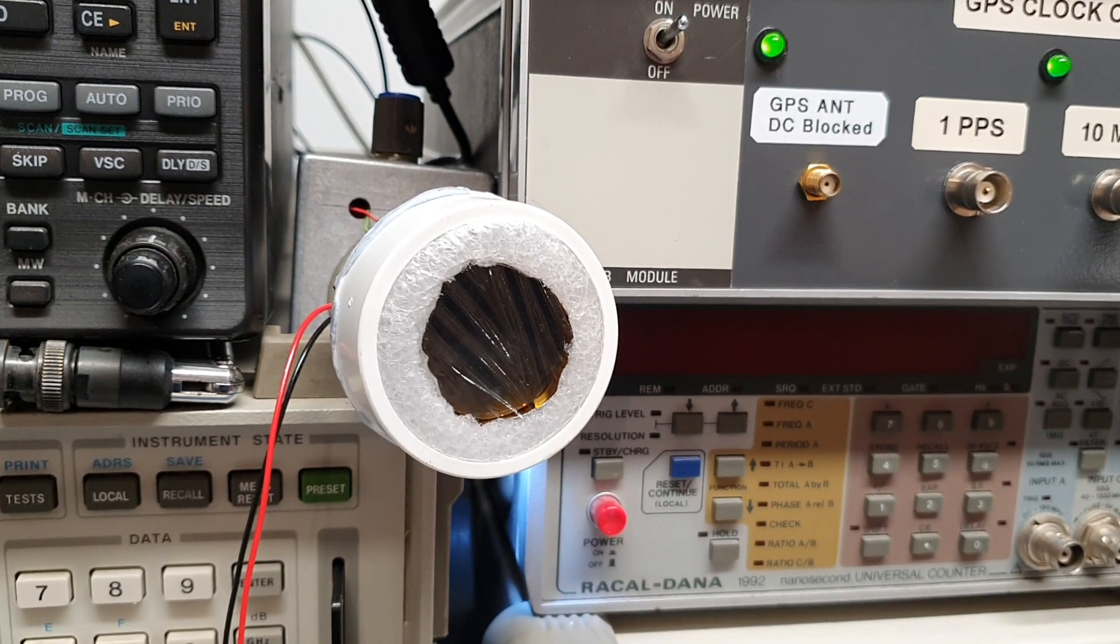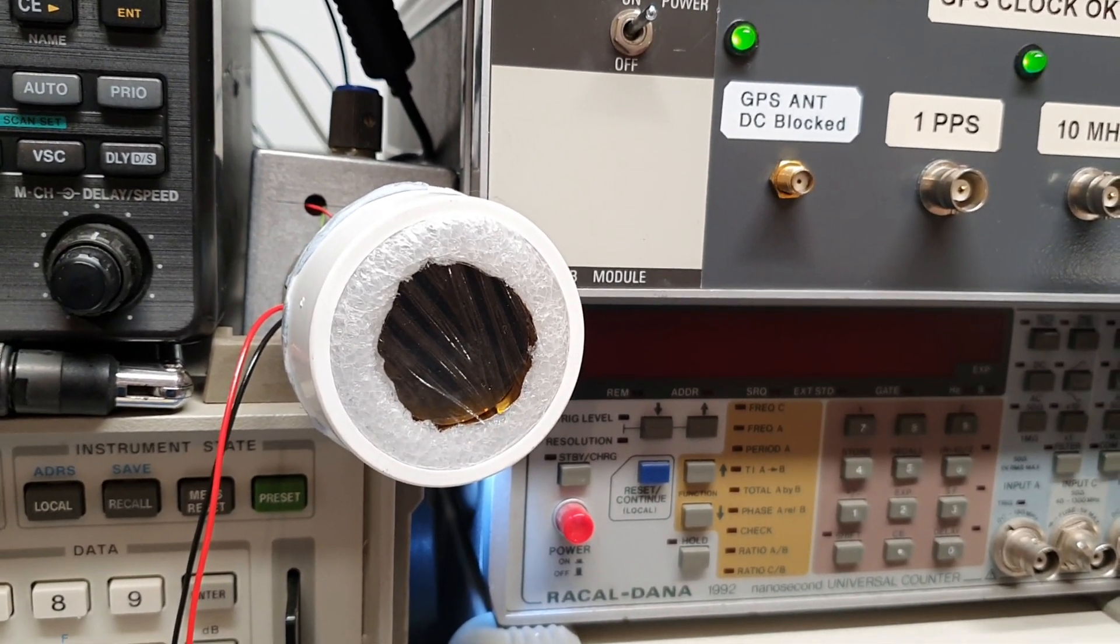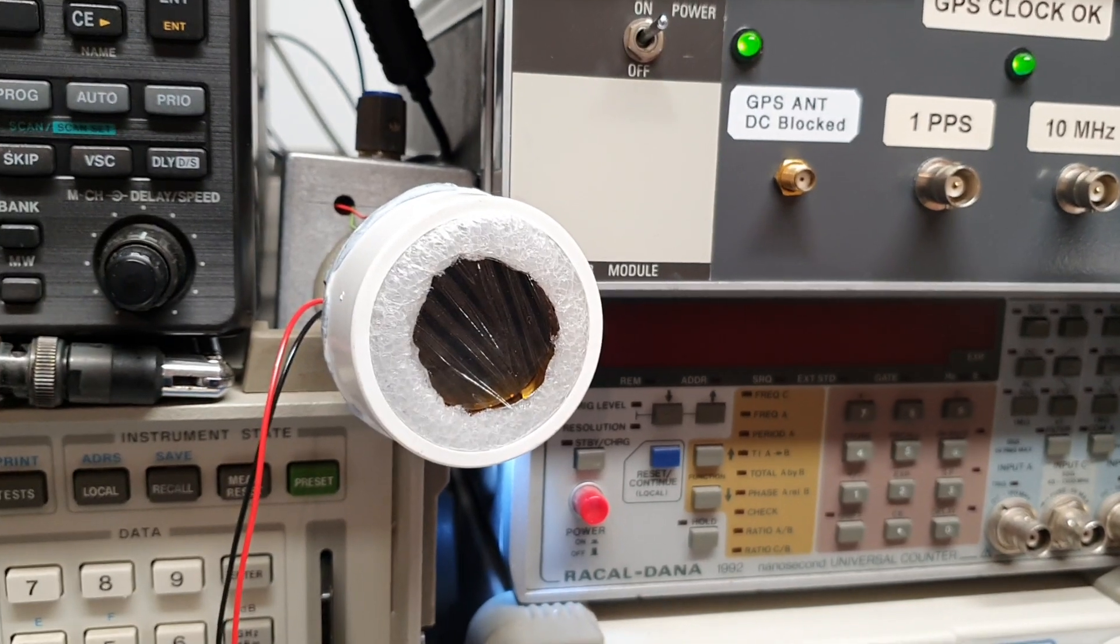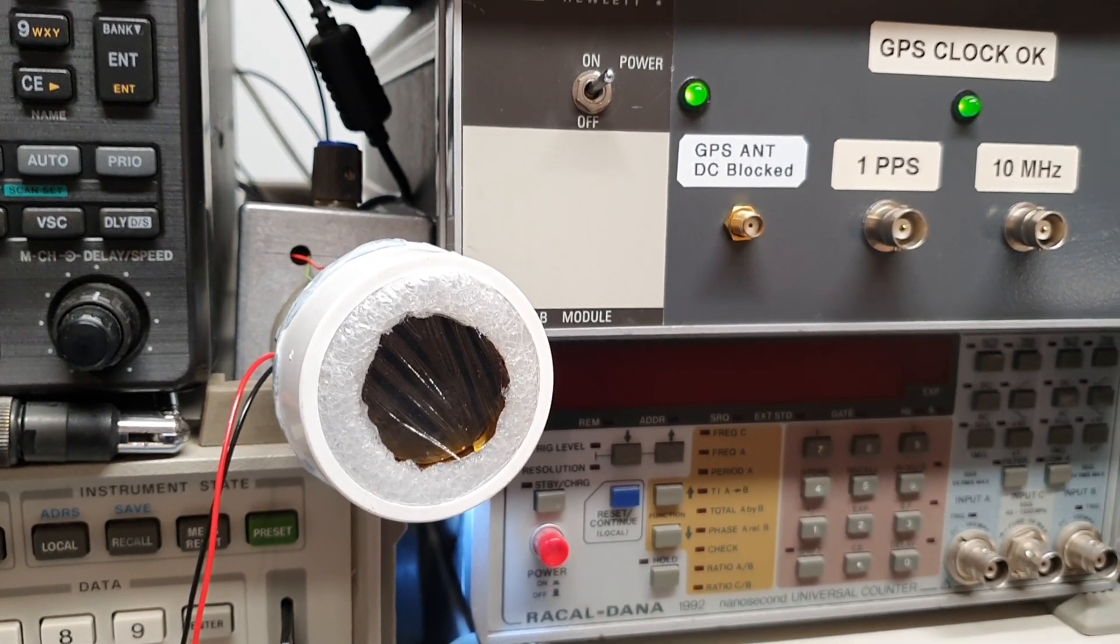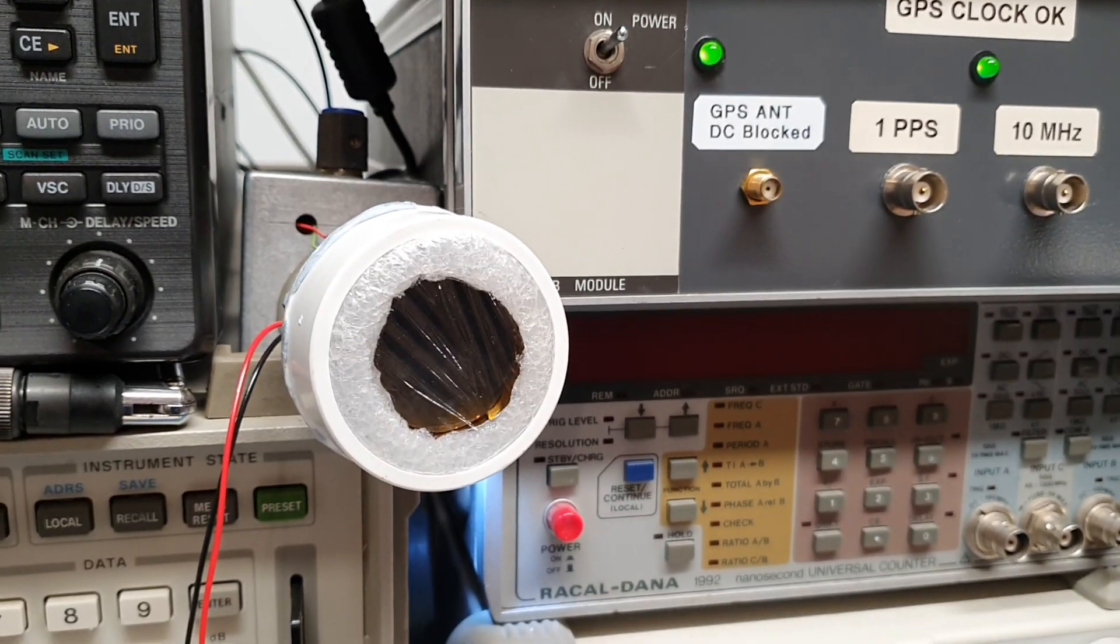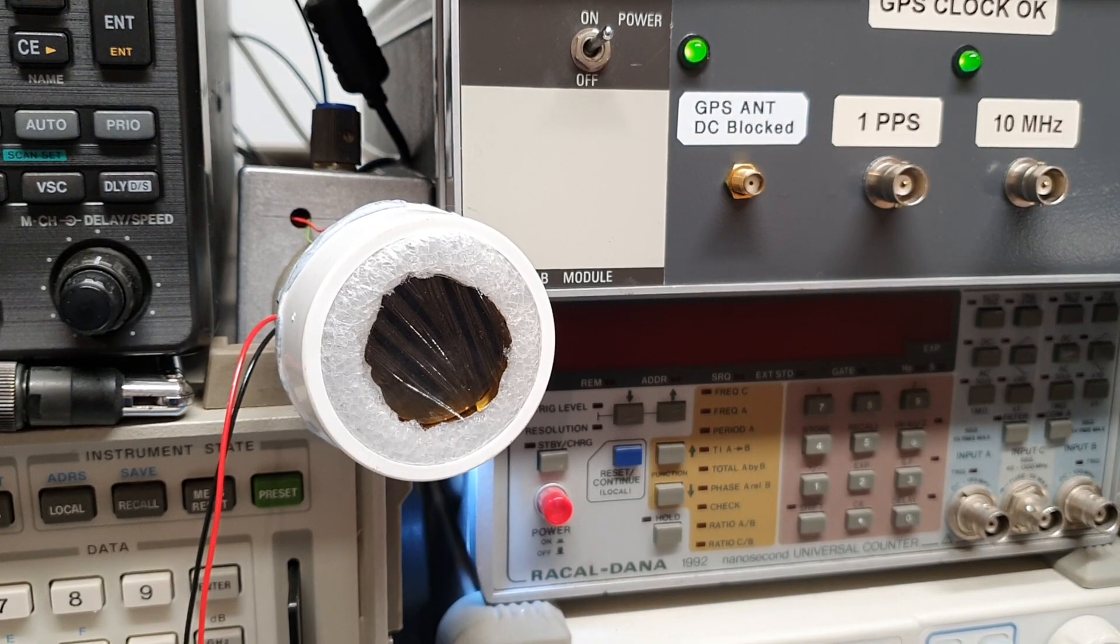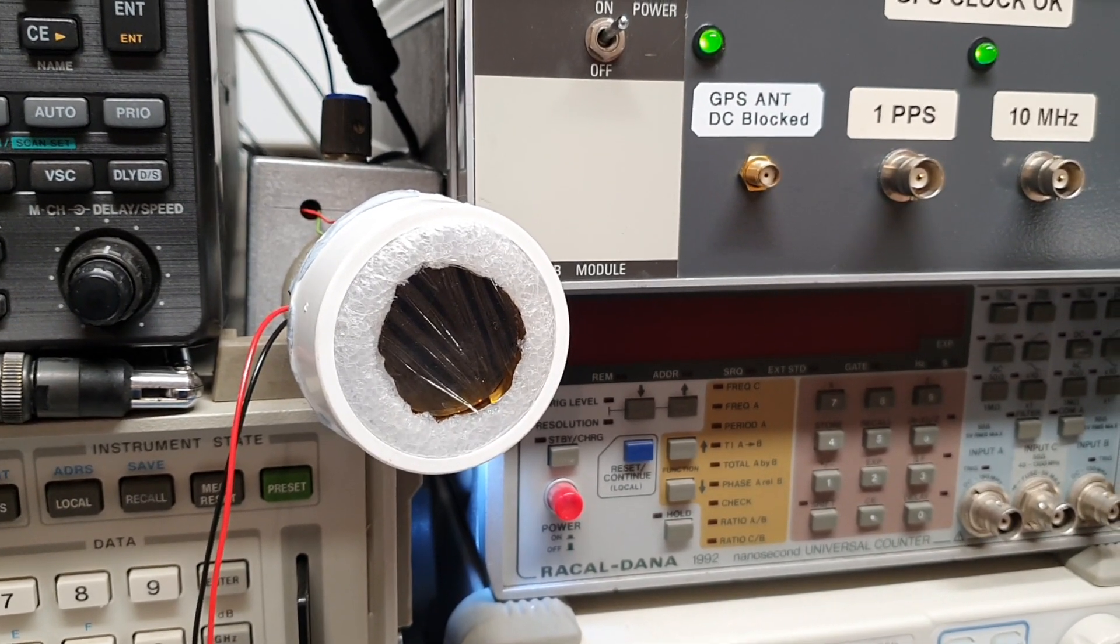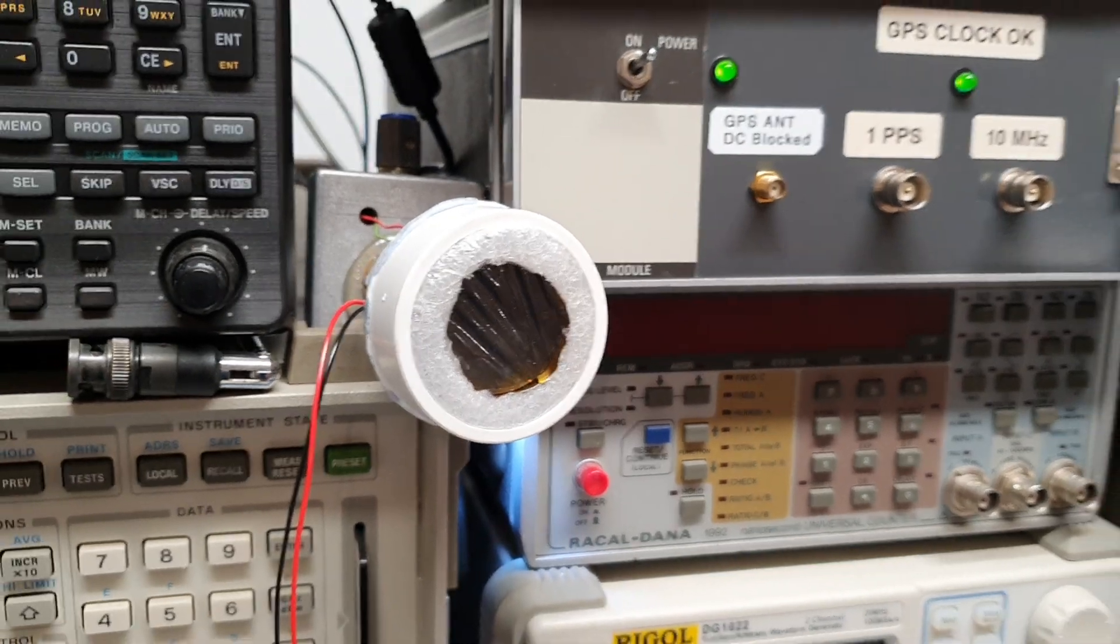Plastic food wrap is actually quite a nice window at 30 terahertz. Glass for instance is practically totally opaque. You can't transmit very much energy at all through glass. But a very thin piece of plastic food wrap works very nicely as a transmission window.